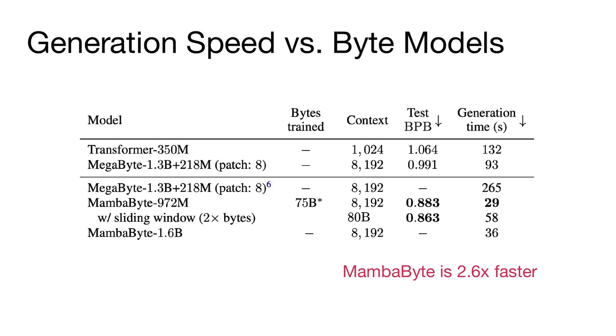We've been primarily focusing on training compute, but utilizing a model like Mamba also allows us to have much better generation speed. Compared to transformer-based models that have to maintain a very large cache and use that as part of generation, MambaByte can use pure RNN-style generation and just produce one byte after the next. Doing so, we're able to achieve much better generation speed compared to transformer-based byte-level models.